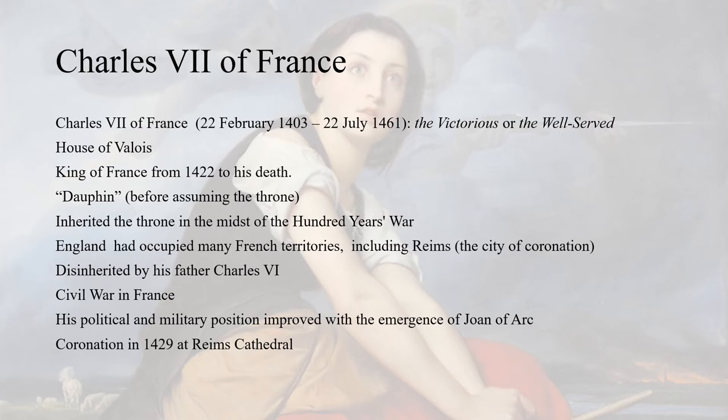Remember, Charles the Seventh is not yet the king at this point. He belongs to the house of Valois, and before assuming the throne he was called the Dauphin. This term goes back to 1349, when Philip the Sixth bought a non-royal territory named Dauphiné. The terms of sale included a clause that the heir apparent of France should be called Dauphin — a parallel to how the heir apparent of England is called the Prince or Princess of Wales.